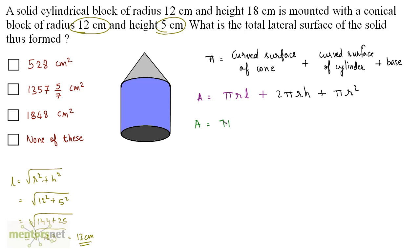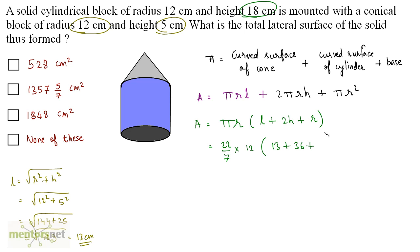Taking π r common, the total area equals π r (L + 2H + r) = (22/7) × 12 × (13 + 36 + 12) = (22/7) × 12 × 61. Solving: 22 × 12 × 61 = 16104 divided by 7, which gives approximately 2300 point something. This value is not among the options, so the appropriate choice would be none of these.